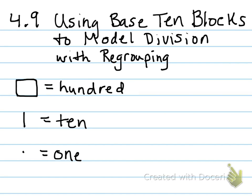All right, let's take lessons on 4.9. The title is Using Base 10 Blocks to Model Division with Regrouping. Right down here I wrote a key for us to use throughout the lesson. A square is going to represent 100, a straight little line is going to represent a 10, and a dot is going to represent a 1. Make sure you have this at the top of your paper as a key.